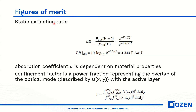For the figure of merit of the modulator, we have the extinction ratio. The extinction ratio depends on the confinement factor, absorption difference, and length. We can control the confinement factor by changing the structure — for instance, using slow light — and we can also increase the length to increase the extinction ratio.